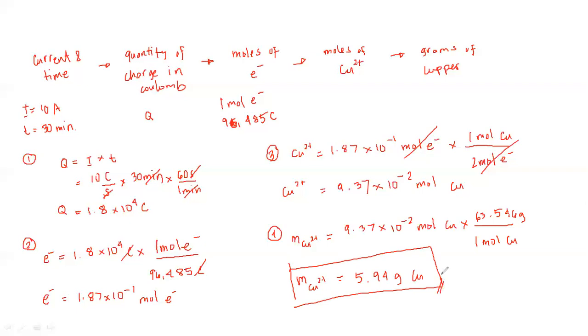In this process of electrolysis, when a 10 ampere current passes through within 30 minutes, a chemical change of 5.94 grams of copper will be reduced.